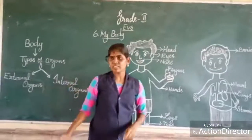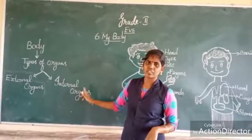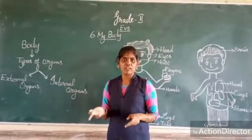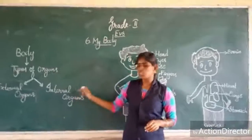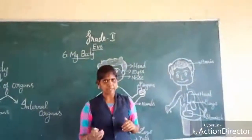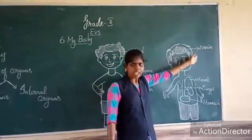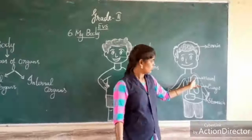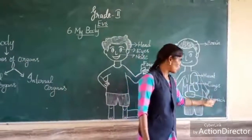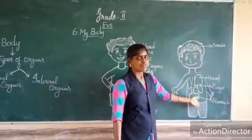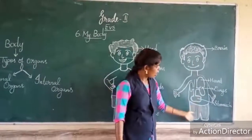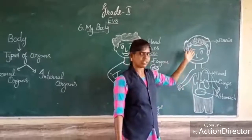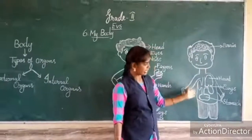What is the meaning of internal organs? Internal organs means we can't see outside. Which part? See the picture: brain — can you see? No. Heart — can you see? No. Lungs, stomach. These parts we can't see outside, so these parts are called internal organs.